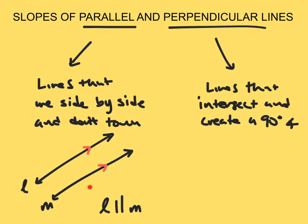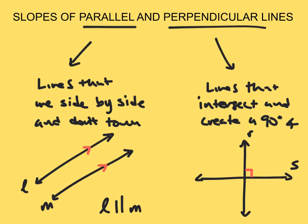We use this notation to show that. Now perpendicular lines are simply just lines like this. Put arrows on each side. And what we know is that they create a 90 degree angle like so. I'm going to call this line R and S.